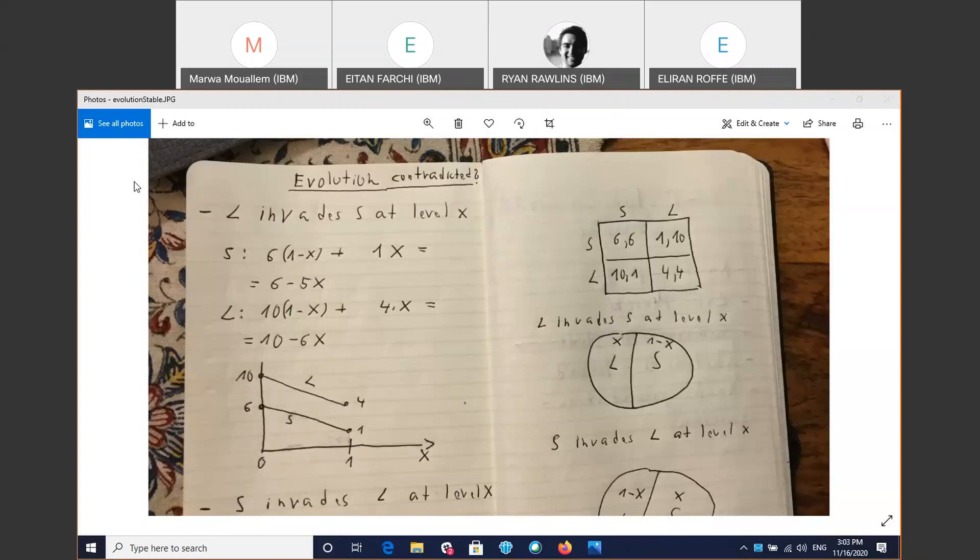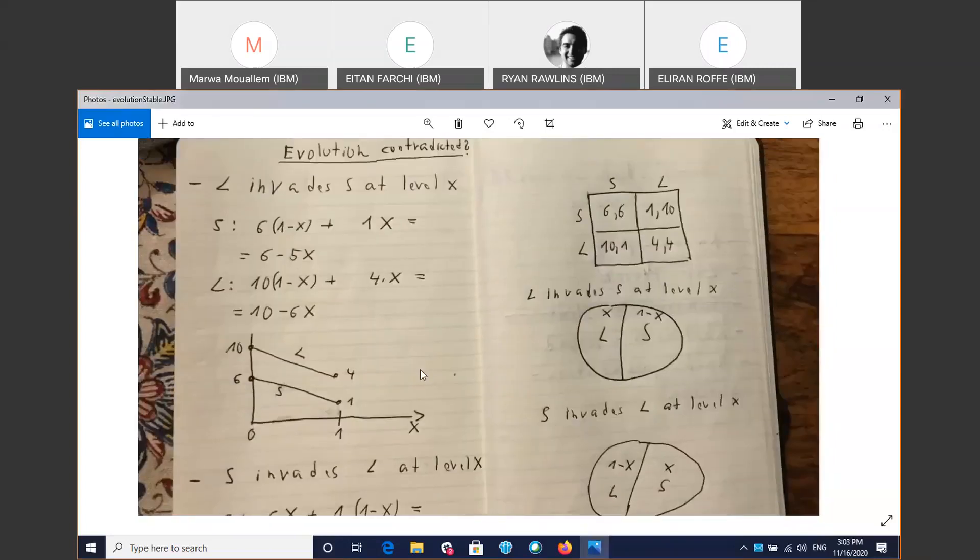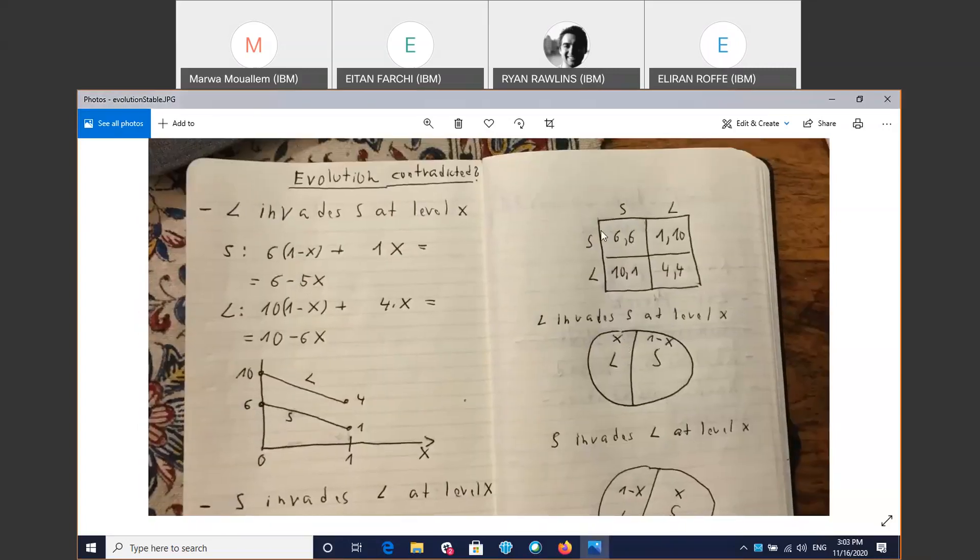So let's consider the following simple game. So you have 2 actions. There's 2 players. Each one of them can act as small or as large. And these are the payoffs. So can anyone tell me what's the Nash equilibrium in this game?